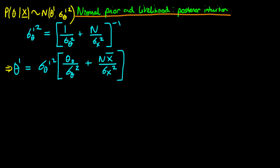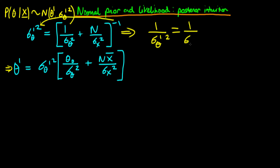I'm going to start with the posterior variance sigma prime theta squared. All I'm going to do is take the minus one over to the other side, which is equivalent to raising both sides to the power minus one. If we do that, we get that sigma prime theta squared to the power minus one — which is the same as one over sigma prime theta squared — is equal to one over sigma theta squared plus n over sigma x squared.